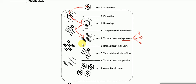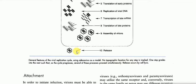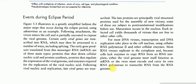Following viral nucleic acid replication, late viral genes are transcribed. The late proteins are principally viral structural proteins used for the assembly of new virions, some of which are subjected to post-translational modification before use. Maturation occurs in the nucleus, and each infected cell yields thousands of virions free to infect other cells. For most DNA viruses, transcription and DNA replication take place in the cell nucleus using cellular RNA polymerase and other cellular enzymes. Most RNA viruses replicate in the cytoplasm, and because the cell lacks enzymes to copy RNA from an RNA template, either the viral genome must itself function as mRNA or the virus must encode and carry its own RNA polymerase.